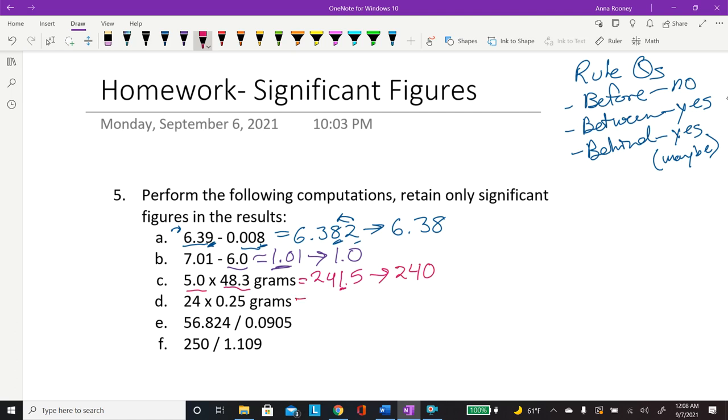And then this one, you have 2 significant figures there, and 2 significant figures there. But when you take 24 times 0.25 grams, you get 6. But because you have 2 significant figures, 6.0 to show the accuracy.